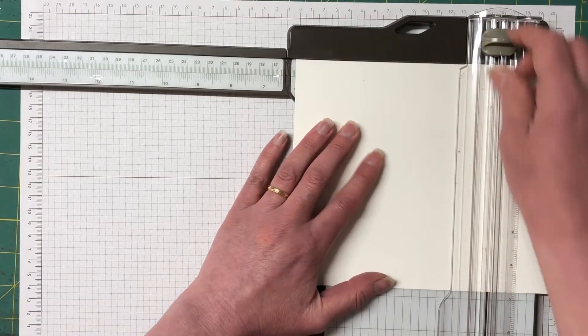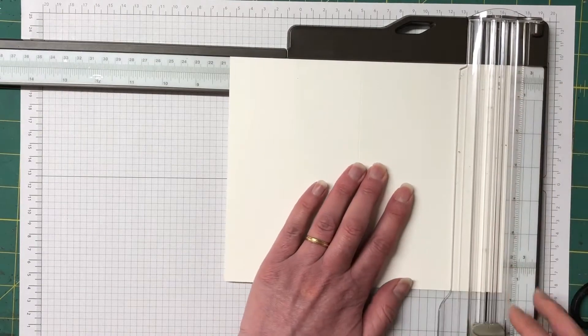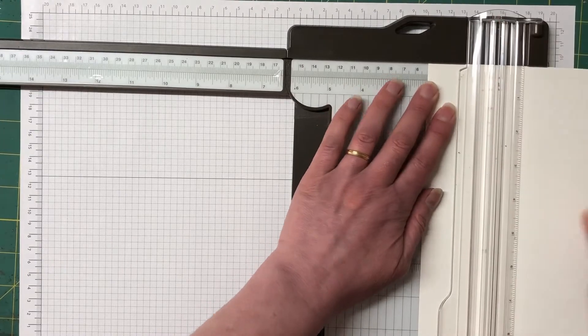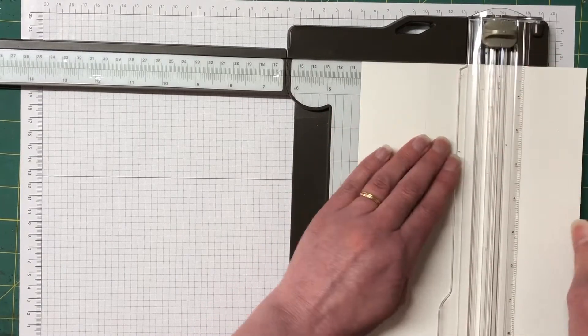Now don't worry about the measurements everyone, they are over my blog so go over and check those ones out. We're going to turn it over to the six and three quarter inch side and we're going to score at two inches, four inches and six inches.